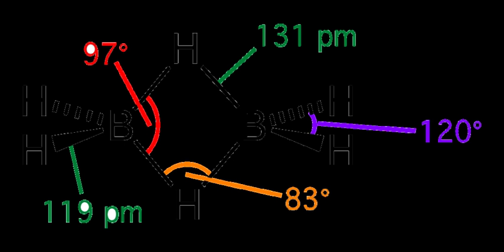The lengths of the BH bridge bonds and the BH terminal bonds are 1.33 and 1.19 angstroms respectively, and this difference in the lengths of these bonds reflects the difference in their strengths, the BH bridge bonds being relatively weaker.